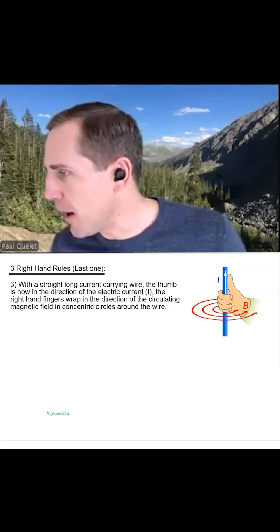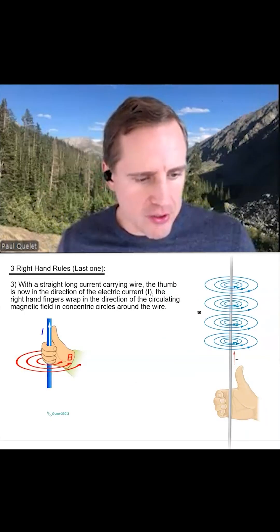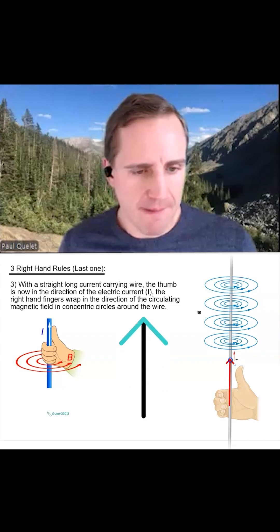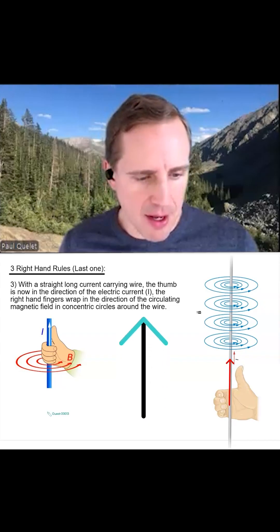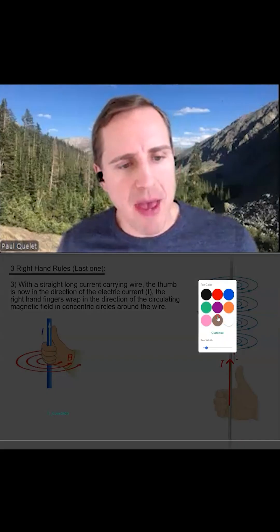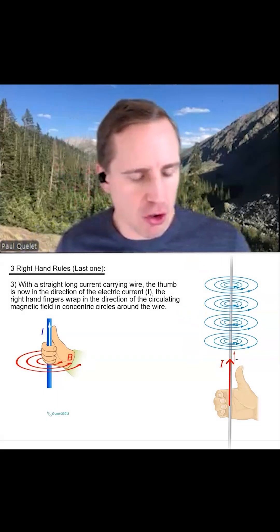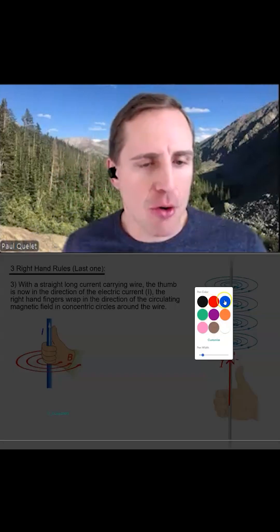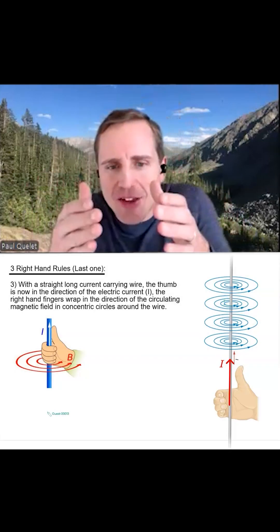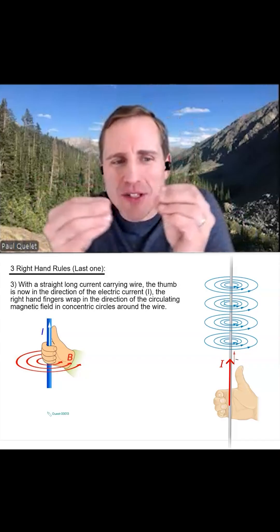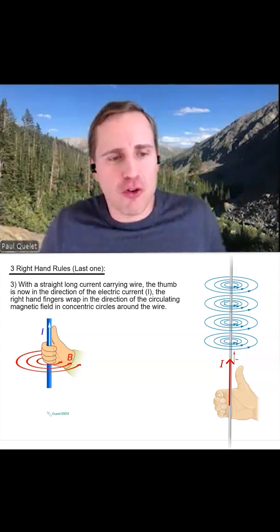This might even be a better way to think about it. The idea is that the current is traveling upwards. So here's the direction of the electric current. So that's a capital I. And we see that the magnetic field is forming concentric circles around the straight long current carrying wire. Notice that the circles are closer together near the wire itself, but they're further apart the further you go out there.